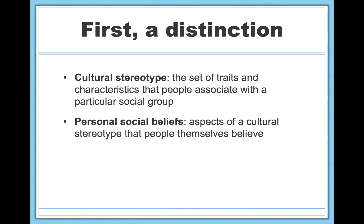As we progress, it'll also be important to try to assess which of these two constructs — cultural stereotypes or personal social beliefs — we're picking up on in the studies we discuss. The two constructs are different. For example, it's perfectly possible to be aware of a cultural stereotype but not to hold that social belief personally. But they can be difficult to dissociate. So as we discuss each study, decide whether you think we're assessing cultural stereotypes or personal social beliefs, and think through why that distinction might matter.